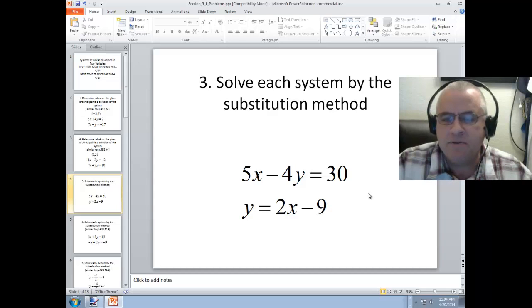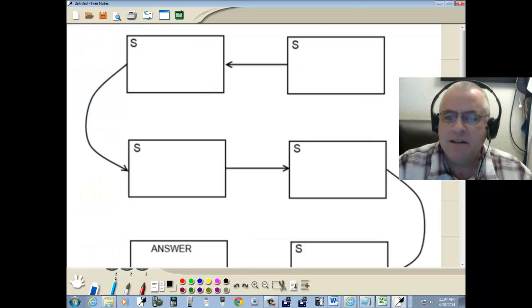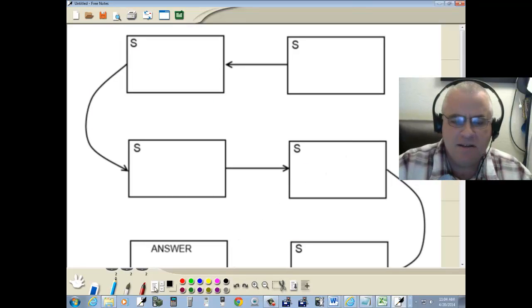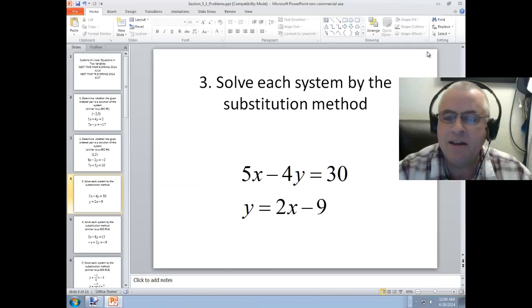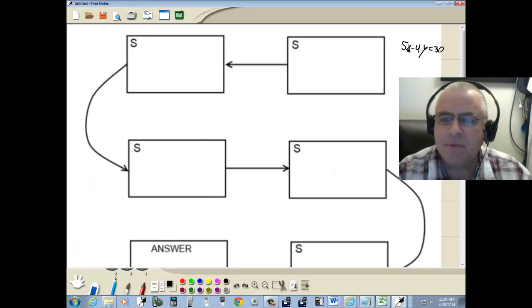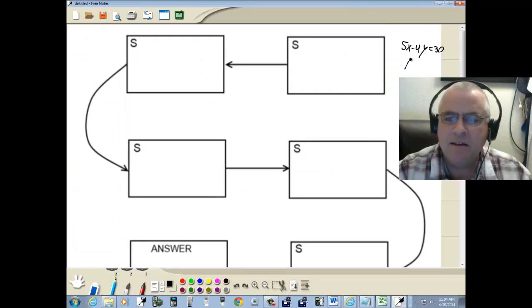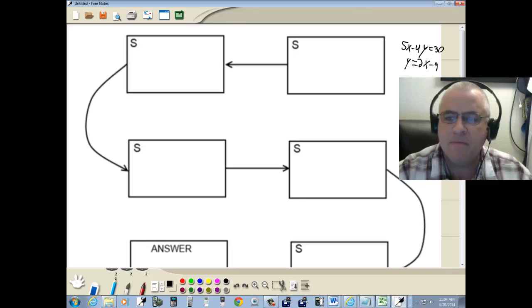5x minus 4y equals 30. Y is equal to 2x minus 9. And I see right away I should have had some place set up so I can write over here, but I'll put it right here. So we've got 5x minus 4y is equal to 30. And y is equal to 2x minus 9. So that's our initial problem.